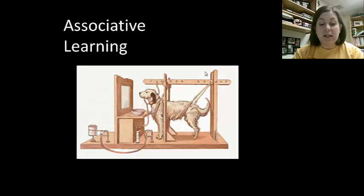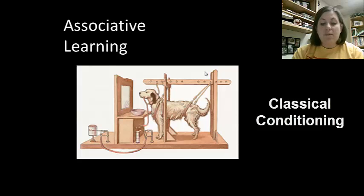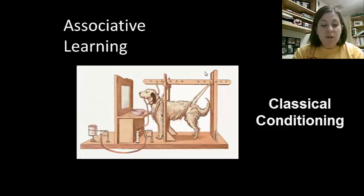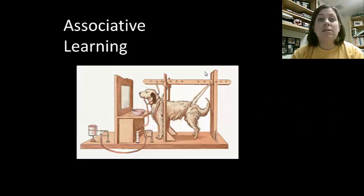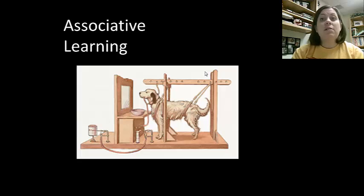Associative learning links behavior to a stimulus — there are changes in behavior that involve connections between two events. Classical conditioning was studied by Ivan Pavlov. He observed that dogs salivate when presented with food, so he decided to ring a bell each time he fed the dog. Eventually, Pavlov would just ring the bell without providing food, but the dog still salivated — it began to associate the bell with the food. This means the individual is conditioned to respond to an irrelevant stimulus. Advertisers use this when they use sex appeal in commercials to sell products, because that sex appeal may have nothing to do with the product, but you associate it with that product.